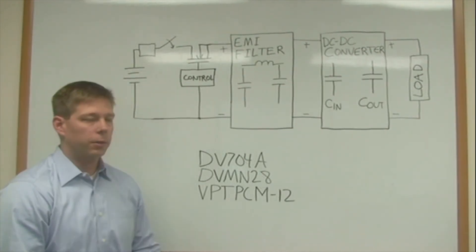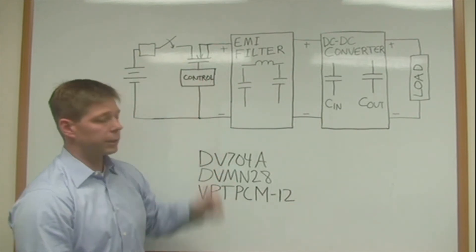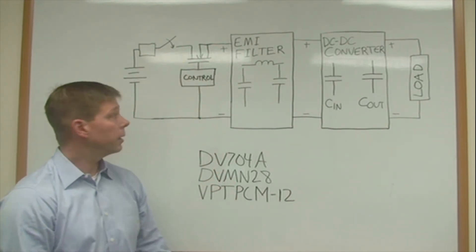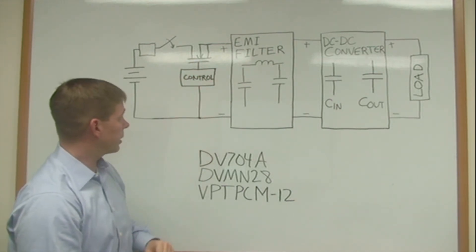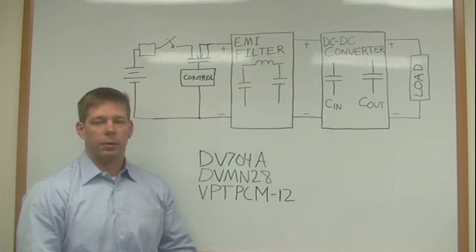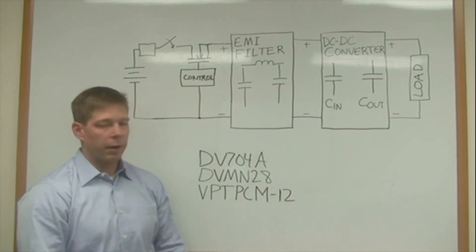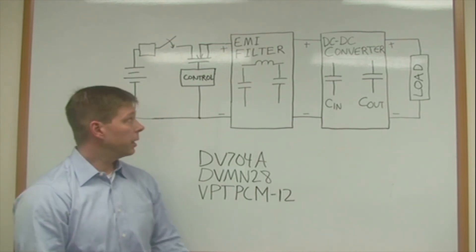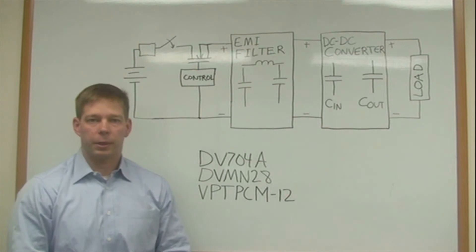The customer can also easily implement inrush current limiting with a series switch in line with the input. The switch can be either in the positive leg or in the ground leg. Basically the control circuit acts to slow down the voltage rise time to the input of the EMI filter in the DC to DC converter. This is basically what's implemented in these three products to limit inrush current.